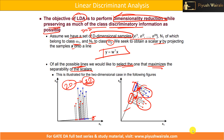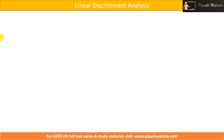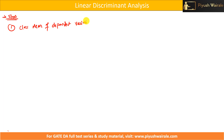In the last video we discussed the LDA part. The main objective of LDA is to perform dimensionality reduction — to reduce two-dimensional data points into one dimension. There are a few steps, similar to what we discussed in PCA. The first step is to find out the class mean of the dependent variable. In a binary classification problem, we need to find the mean for the red class and the mean for the blue class.